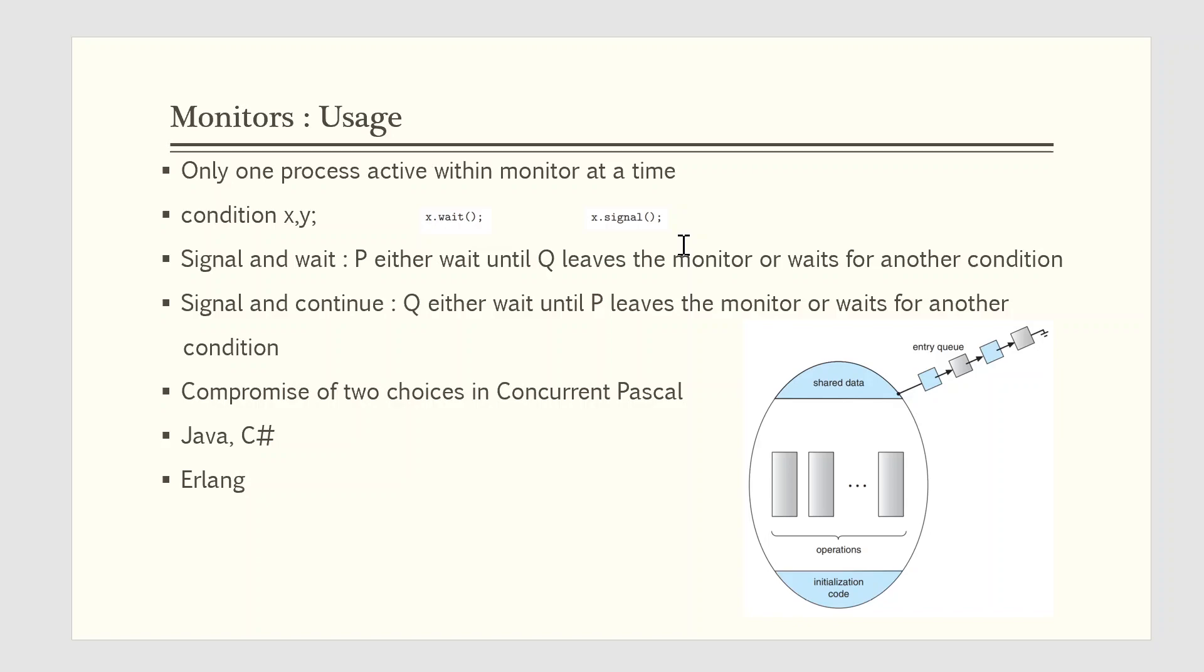Now, suppose that when the x.signal operation is invoked by a process P, there exists a suspended process Q associated with the condition x. Clearly, if the suspended process Q is allowed to resume its execution, the signaling process P must wait. Otherwise, both P and Q would be active simultaneously within the monitor. Note, however, that conceptually both processes can continue with their execution.